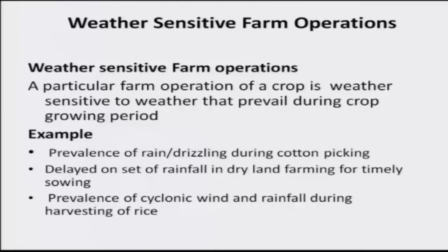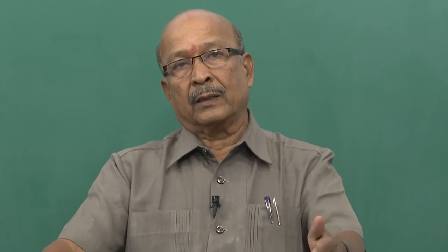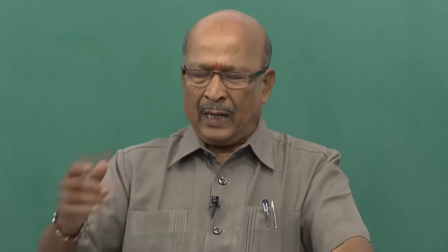Weather sensitive farm operations: a particular farm operation is weather sensitive to weather that prevails during the crop growth stage. When making plant protection chemical applications — dusting or spraying — if done against the windward direction, there is drifting. It may fall on the person doing the operation, causing poisoning, and also input efficiency is reduced. Windward direction means the direction from which wind comes; leeward means where wind goes.